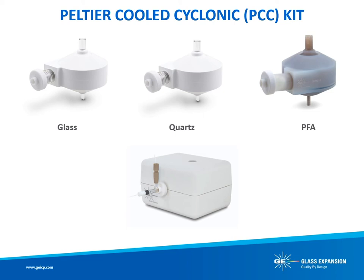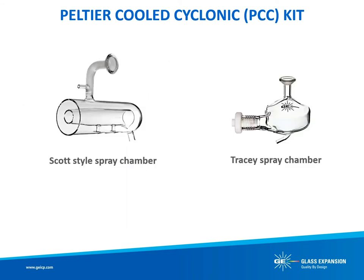The advantage of a cyclonic spray chamber over a Scott-style spray chamber is twofold. First, faster washout: the cyclonic design has dramatically lower surface area and volume from which to remove the previous sample. Second, more efficient removal of large droplets — unlike a Scott-style spray chamber, a cyclonic spray chamber uses centrifugal force to impact large droplets on the spray chamber wall. On the next couple of slides we'll see a comparison of these two spray chambers on the same instrument.